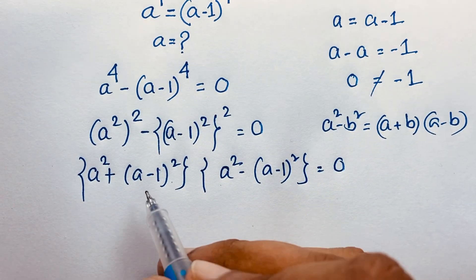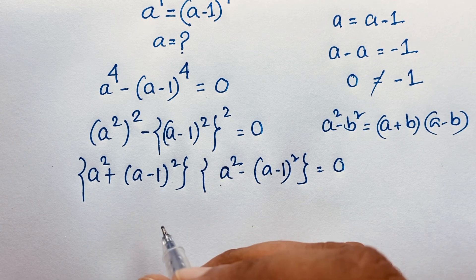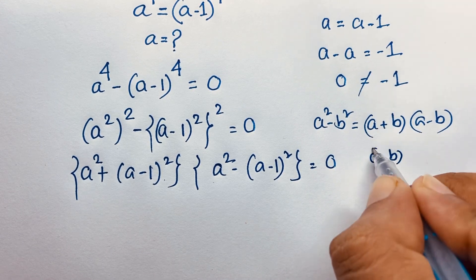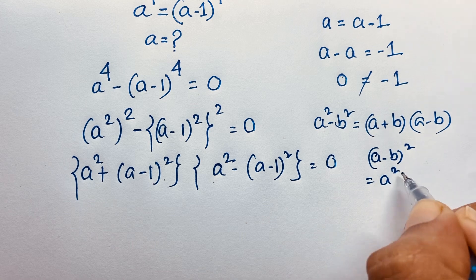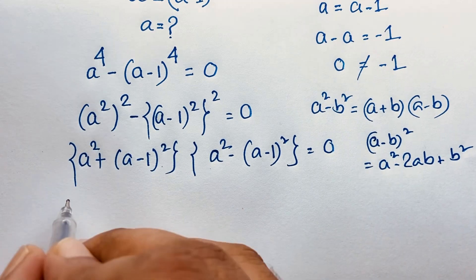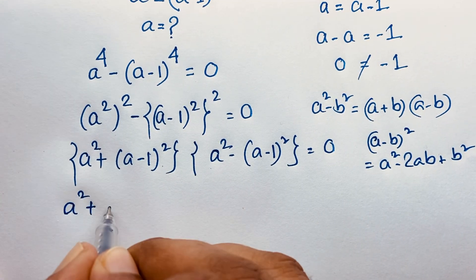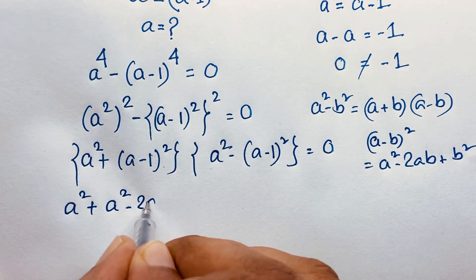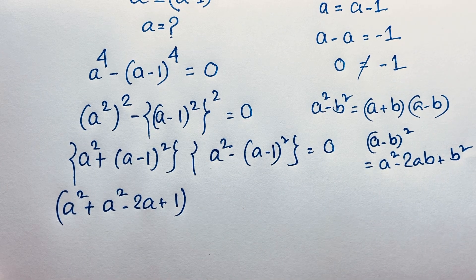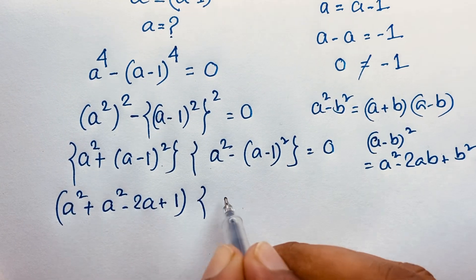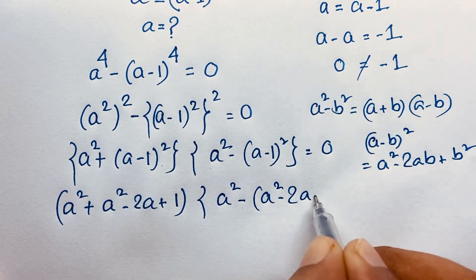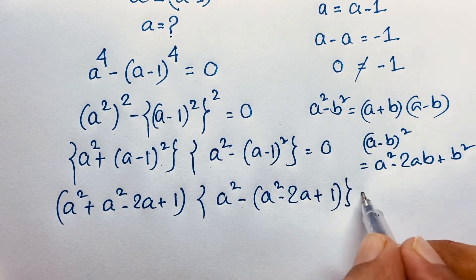Now you can apply the a minus b whole squared formula, which is a squared minus 2ab plus b squared. So expanding a minus 1 whole squared, it will be a squared plus a squared minus 2a times 1 plus 1 squared. Then here a squared minus a squared minus 2ab plus b, which equals 1, so the expression equals 0.